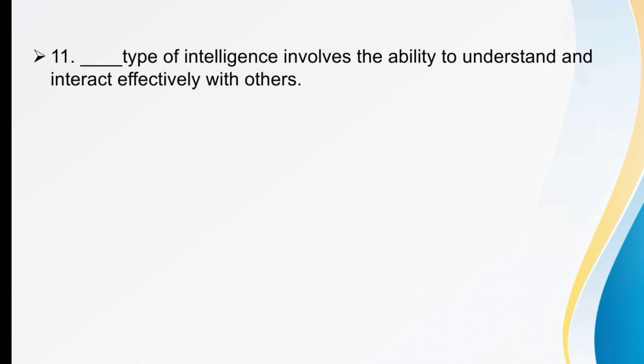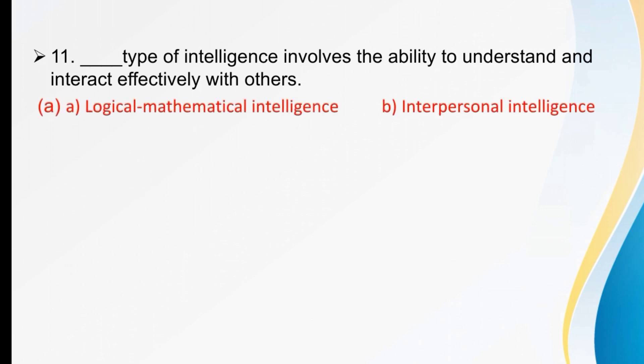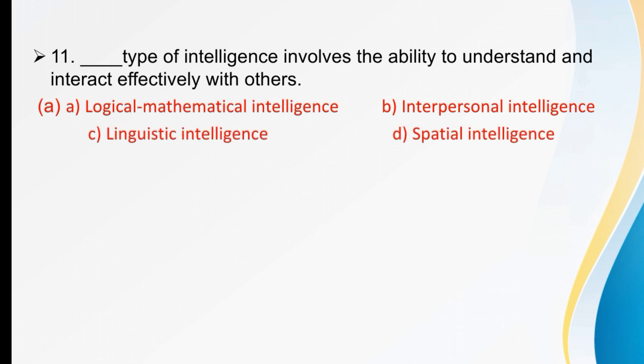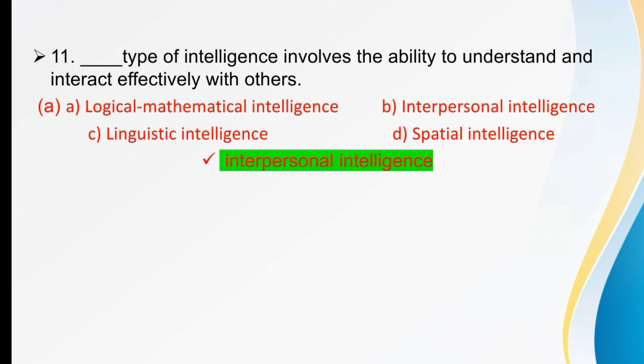Which type of intelligence involves the ability to understand and interact effectively with others? Options are logical-mathematical intelligence, interpersonal intelligence, linguistic intelligence, or spatial intelligence. The right option is B — interpersonal intelligence is the type of intelligence which involves the ability to understand and interact effectively with others.